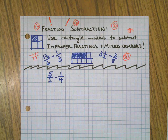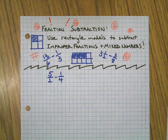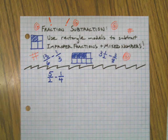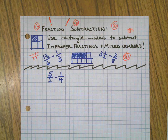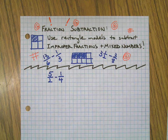Hi there, here's a new video thanks to a request from a subscriber — your requests are always considered and this is a good one. We've done fraction subtraction with plain old fractions where the numerator is smaller than the denominator, but what happens when we have improper fractions or mixed numbers where the numerator is bigger? Best way to answer that is to go ahead and do it and see if the system you already learned works.